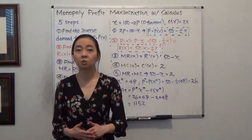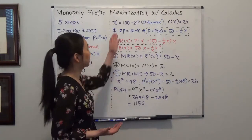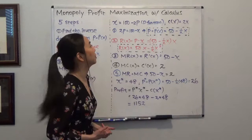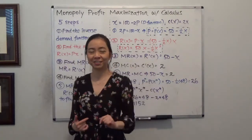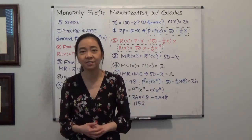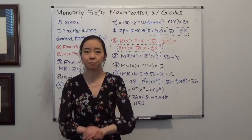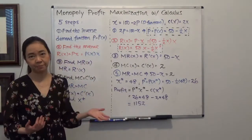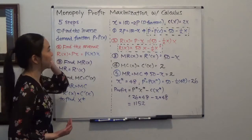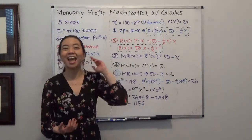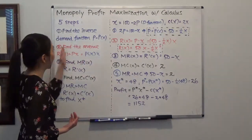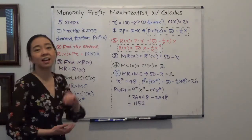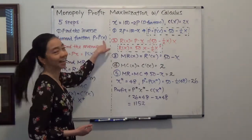So typically in this kind of question, you will be given a demand function that the monopoly faces, and you will also be given a total cost function. We're going to use calculus to solve the profit maximization problem. The first step is that we have a demand function, and we're going to find the inverse demand function and express price as a function of quantity x.